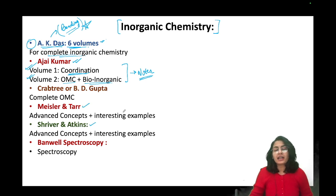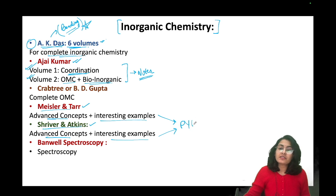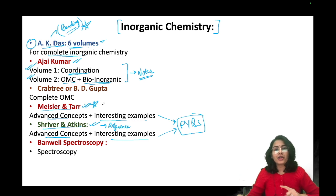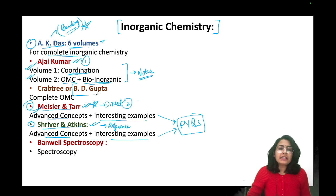Along with this, you can make notes from Meisler and Tarn, Shriver and Atkins, because all of this is there - coordination, organometallics, bio-inorganic, all of these things are also present in these two books. But these are advanced concepts as compared to Ajay Kumar. There are more advanced concepts with interesting examples which have been asked in your previous year questions. These two, specifically Shriver and Atkins, can be used as a reference book. But if you study Meisler and Tarn, this is actually more important. Meisler and Tarn is more important compared to Shriver and Atkins because this is direct and to the point, less time consuming. Just go through this. Once you are done with Ajay Kumar, go through Meisler and Tarn also. First do Ajay Kumar, then number two, Meisler and Tarn for coordination and organometallic.